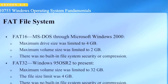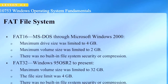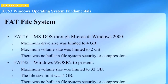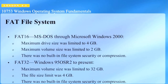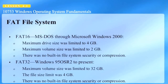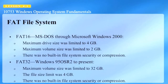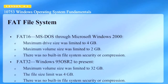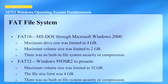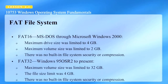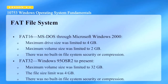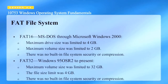FAT16 was used with MS-DOS through Microsoft Windows 2000. Its maximum drive size was limited to 4GB and the maximum volume size was limited to 2GB. There was no built-in file system security or compression with FAT16. FAT32 became available on Windows 95 OSR2 and is still available today. The maximum volume size is limited to 32GB, the file size limit is 4GB, and there is no built-in file system security or compression.